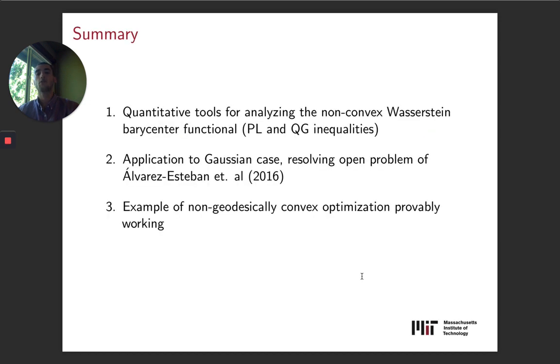In summary, we found some quantitative tools for analyzing the non-convex Wasserstein barycenter functional: PL inequality and quadratic growth inequalities. We applied them to the Gaussian case to resolve an open problem from Alvarez-Esteban et al. 2016. And really this can be thought of as an example of non-geodesically convex optimization provably working.